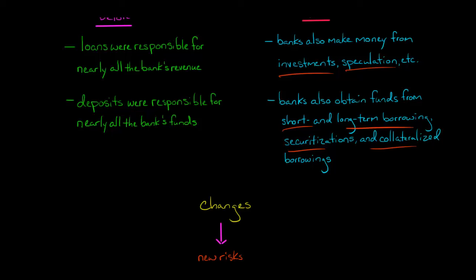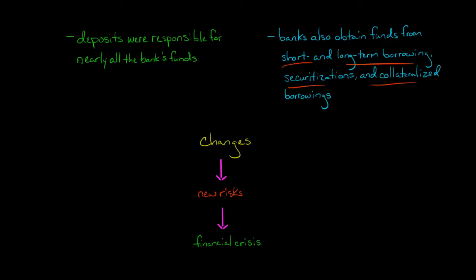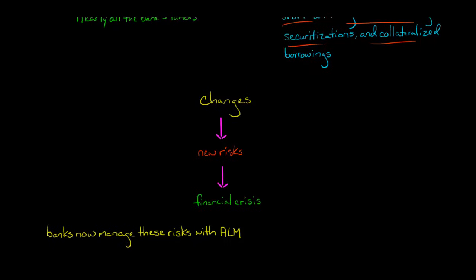These changes to the banking industry have introduced new risks. Banks' failure to manage some of those risks — for example, related to securitizations and mortgage backed securities — resulted in the financial crisis in 2008. So now banks are really focusing on both newer risks and historic risks with Asset Liability Management, ALM.